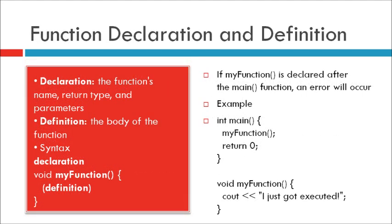Now let us see function declaration and definition. A C++ function consists of two parts. First is the declaration: the function name, return type, and parameters if any. Definition means the body of the function — the code to be executed which is inside the function. void myFunction is the declaration. When we put code in the curly brackets, that is the definition. If a user-defined function such as myFunction is declared after the main function, an error will occur because C++ works from a top-to-bottom approach, so if the function is not declared above main, the program is unaware of it.